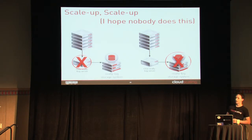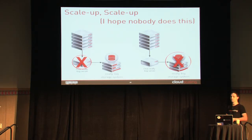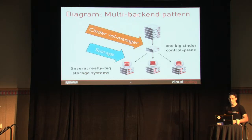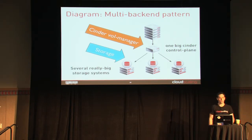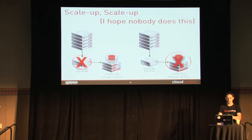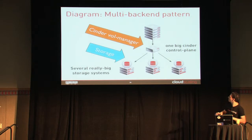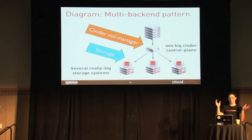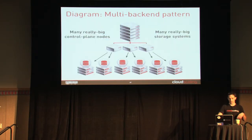Here we have a scale-up pattern, and I hope nobody does this. You have a really big server controlling a really big storage system in the backend, and you can lose either of your really big servers. Something introduced in Grizzly was this idea of a multi-backend pattern, where you can get your really big control plane — or several — to control several really big storage systems. The idea was: we realize that we can't have just one really big storage system, so we're going to add multiple really big storage systems and manage them through Cinder, with one box that can orchestrate these, and then make multiple of these boxes that control multiple giant storage systems.